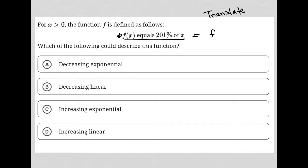So, f of x obviously equals, it's just the equal symbol, 201%. Well, the percentage, the decimal form of a percent is you move the decimal over two spaces.